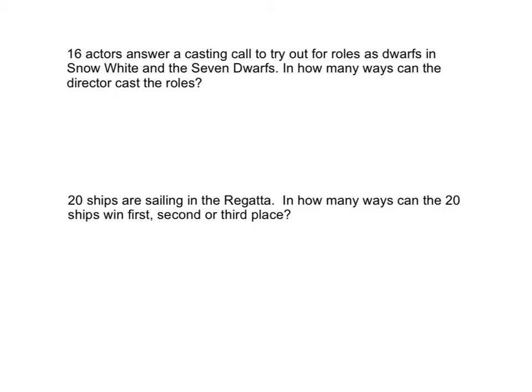Here are a couple of story problems. Sixteen actors answer a casting call to try out for roles as dwarfs. How many ways can the director cast the roles? So we have sixteen actors, and the roles, each one of the dwarfs has a particular name and role. So order matters. So we're going to take the permutation of sixteen taking seven at a time.